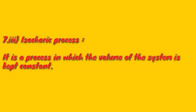Now, the isochoric process. It is a process in which the volume of the system is kept constant. That means in an isochoric process, the volume of the system is kept constant throughout the process — the volume does not change throughout the process. Such a type of process is called the isochoric process.